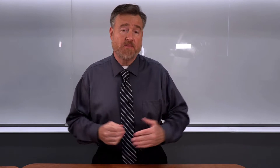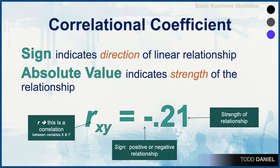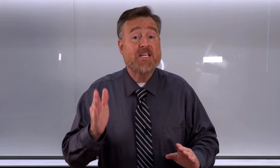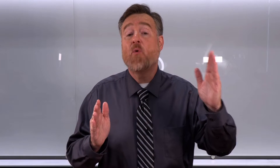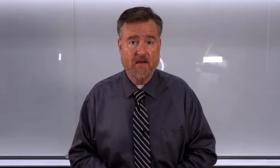If the sign is positive, the relationship is positive. If the sign is negative, the relationship is negative. We also see a number, and when we consider only the absolute value of that number, it tells us the strength of the relationship. That number will vary between 0 and 1 in its absolute value, with numbers closer to 1 indicating stronger relationships and numbers closer to 0 indicating weaker relationships. A correlation of positive 1 is exactly as strong as a correlation of negative 1. A 0.8 positive correlation is actually less strong than a negative 0.9 correlation.